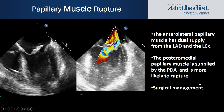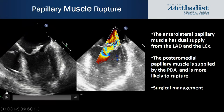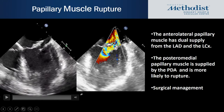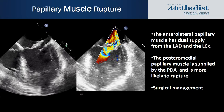Papillary muscle rupture is something to think about when patients present with chest pain and a murmur — the murmur can be soft because of acute MR. On TEE, rupture of the papillary muscle leads to a flail anterior leaflet with significant MR. The anterolateral papillary muscle has dual supply from the LAD and circumflex, while the posteromedial papillary muscle is supplied by the PDA and is therefore more likely to rupture. Management is surgery. This finding is seen in late-presenting MIs.